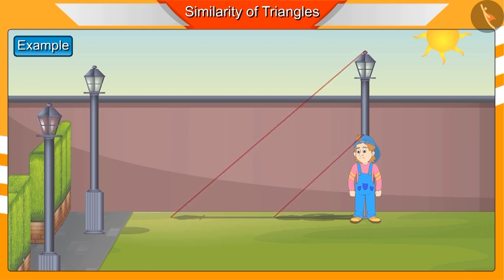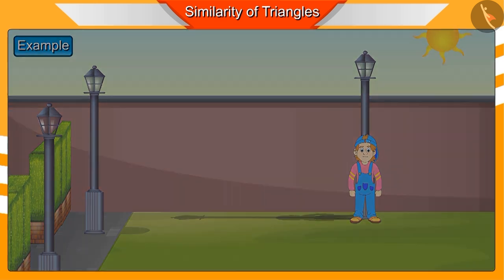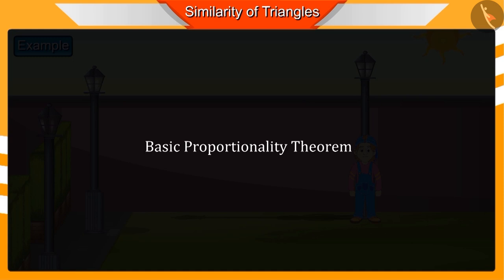If the height of Nakul is 5 feet, then find the height of the pole. Can you find this? You may think that it is not possible to do this without a ladder and a scale, but solving this and such similar questions becomes easy with the help of basic proportionality theorem.